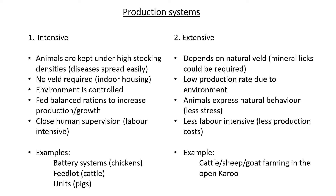Extensive systems are less labor intensive — animals are generally left alone, with maybe one herder checking on them daily. This also means lower production costs for the farmer. Examples include normal cattle, sheep, and goat farming. The textbook gives the example of the open Karoo, where animals are allowed to move freely on open veld, not brought inside at night — they're simply left outside to do what they want.